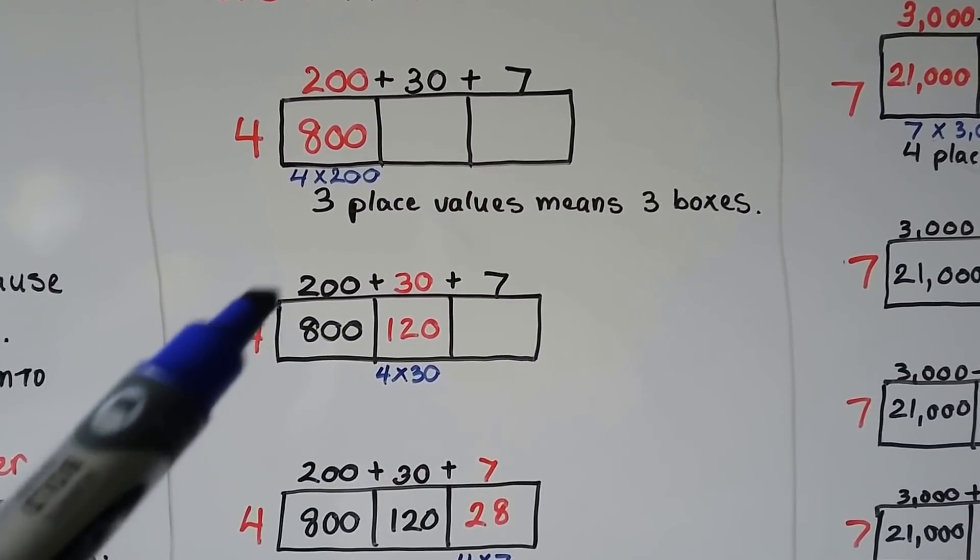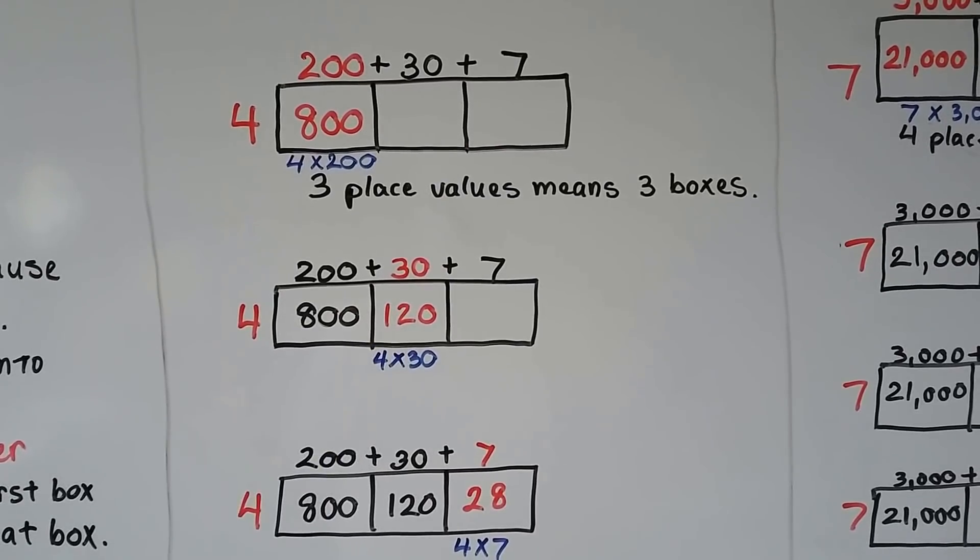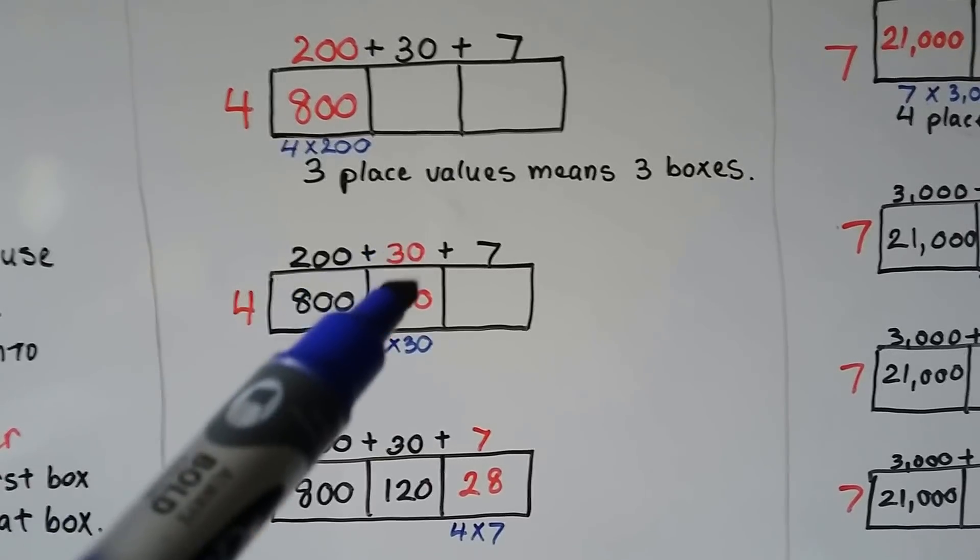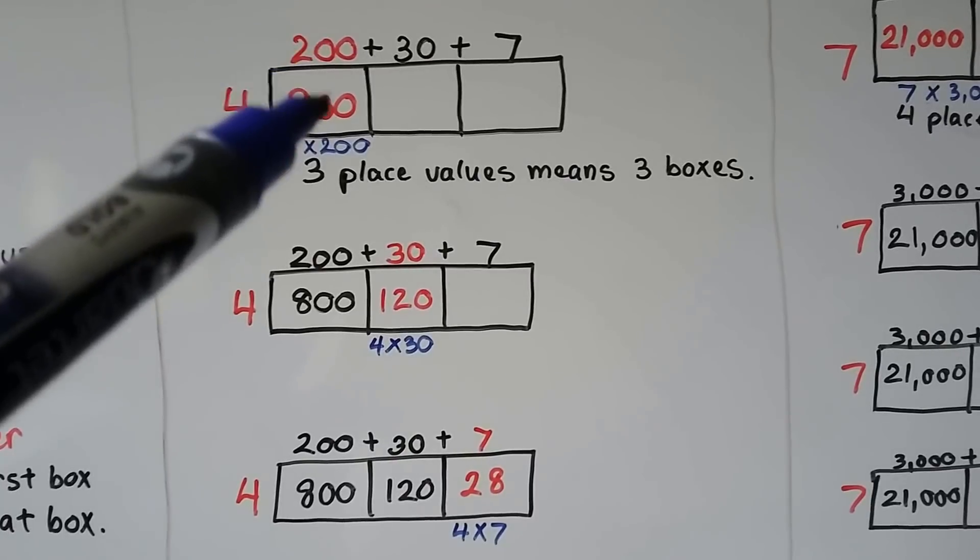Then we multiply 4 times the 30. That's 120. We write it in the box. It's like 4 times 3 is 12 with an extra 0. This one was like 4 times 2 is 8 with two zeros.